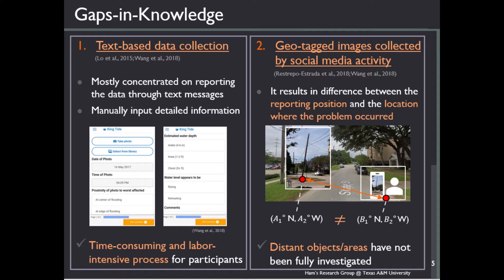Generally, it has mostly concentrated on reporting through text messages. Although a few studies are using photos, researchers have primarily assumed that the location of a user's smartphone is the same as where the problem occurred, which means distant objects and areas likely dangerous to get to cannot be fully investigated.